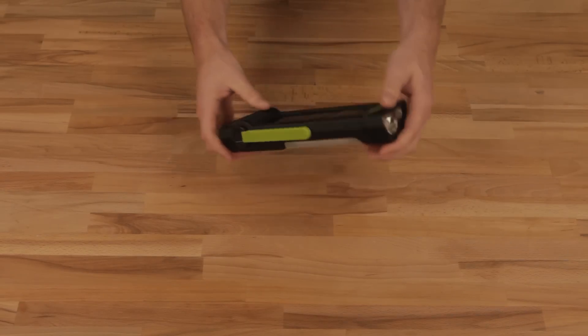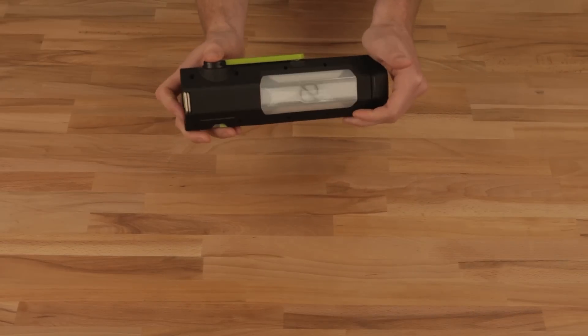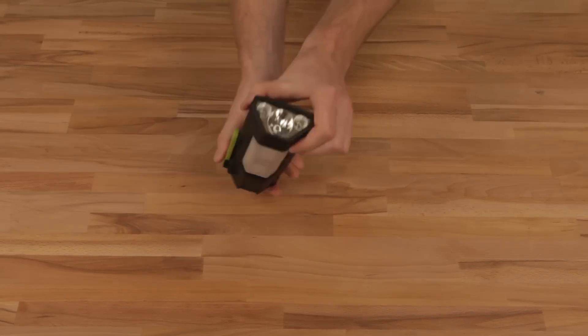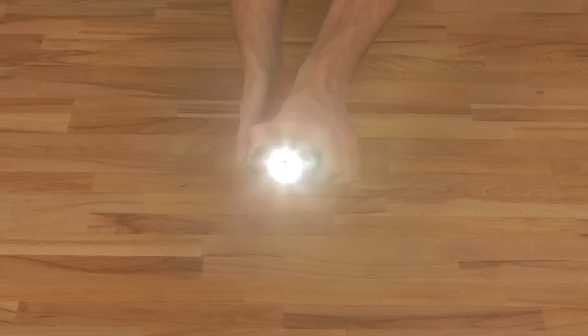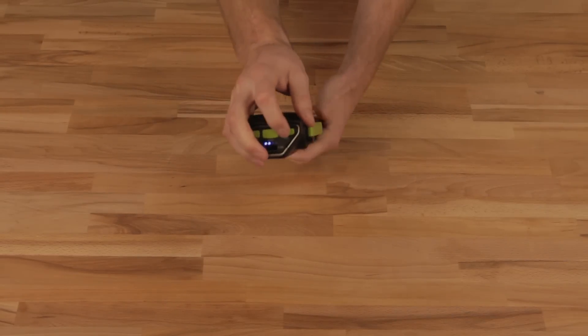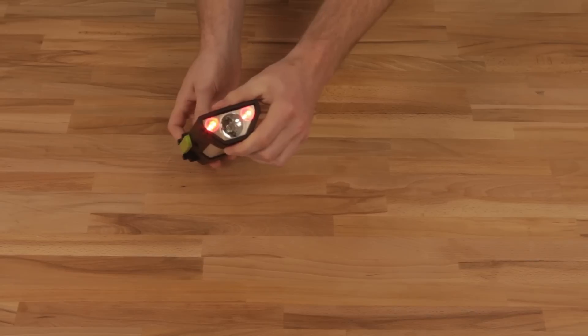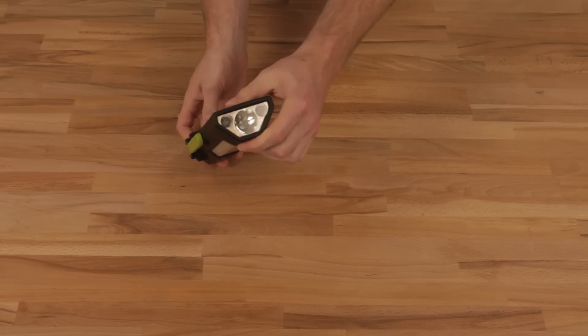It has three different lights on it. It's got the floodlight with a few different settings for that. The spotlight. It's a 180-lumen spotlight. A couple different settings for that. And a red light, which you can have it flash or just on.